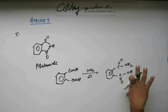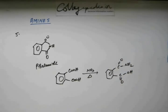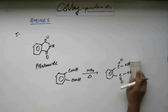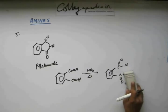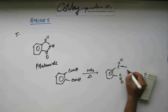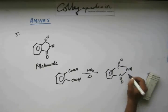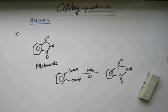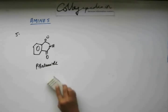And if you heat it, then water molecule will come out from here, and you are going to get a cyclic amide like this. So this is phthalimide. So if you start with phthalimide and you add a base to this, if you add NaOH...